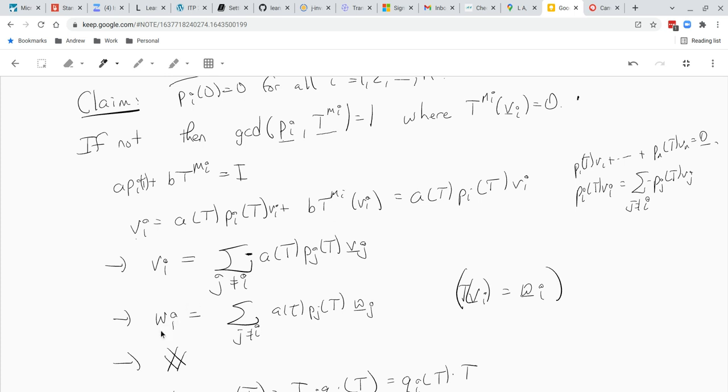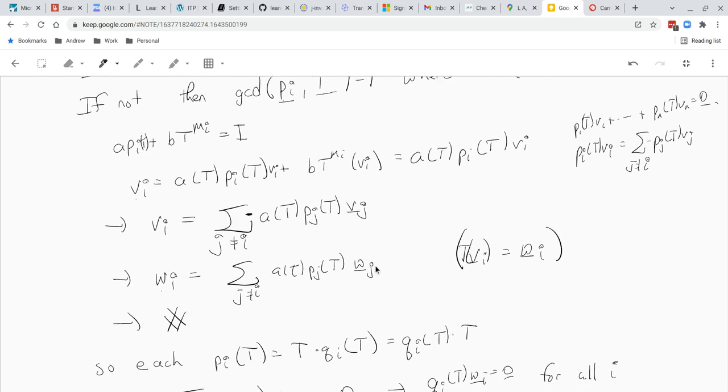Well, T of Vi is Wi, T of Vj is just Wj. We have Wi is a linear combination of the Wj's. And this is impossible because by induction we assume that we had a direct sum. So if this sum is direct, you can't have that something in the i-th thing is the linear combination of the others. So that's a contradiction.